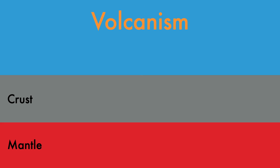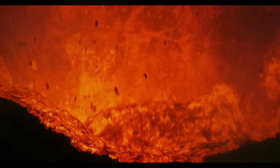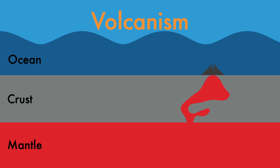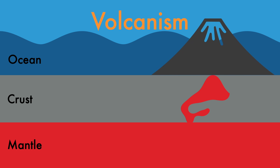Volcanism occurs when superheated material from the Earth's interior makes its way into the Earth's crust. Volcanic features known as plutons can form underground as magma penetrates the Earth's crust and then cools beneath the Earth's surface. More recognizable, however, are the volcanoes that break through the Earth's crust and spew out lava, gas, and ash. Through repeated eruptions, volcanoes form mountains over time. If volcanoes begin their life on the ocean floor, they may eventually grow tall enough to break through the ocean surface and form islands.